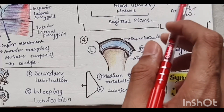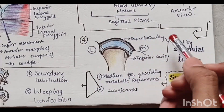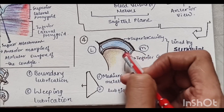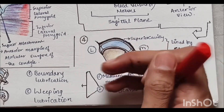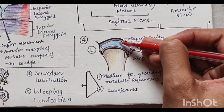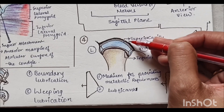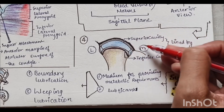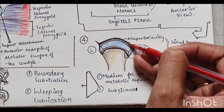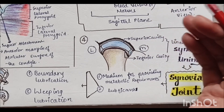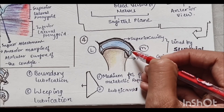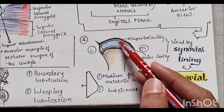In coronal section, superiorly is the articular surface of the temporal bone and inferiorly is the articular surface of the condyle, with the disc in between. The space between the superior articular surface and the disc is called the superior joint cavity, which is responsible for the translatory movement of the condyle. Between the disc and the condyle is the inferior joint cavity.